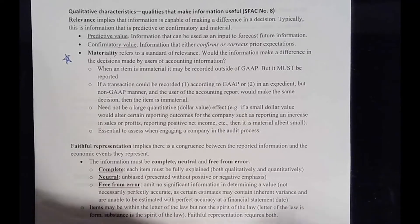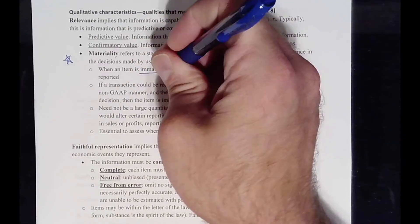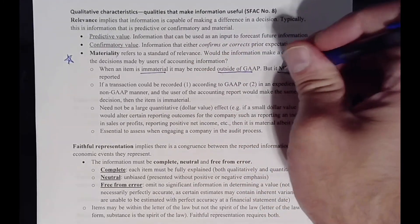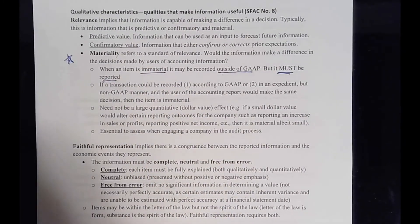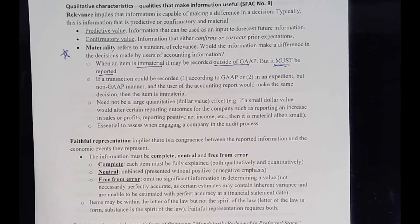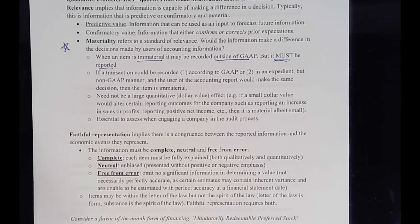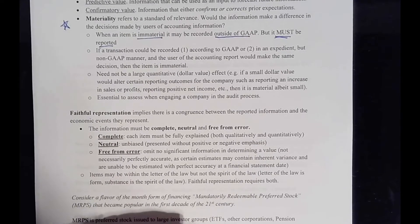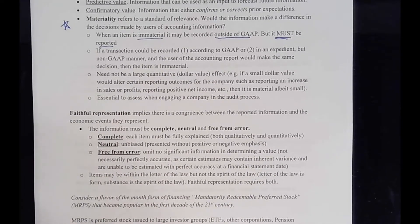When identifying transactions to record, we have to ask: is this transaction material? Will it make a difference in an investor or creditor's decision to invest their money? When an item is considered immaterial, it can be recorded outside of GAAP, but it must still be reported. It's not that we can just ignore it — we've identified it as something we need to record, but we may not have to follow the strict lines of GAAP. If a transaction could be recorded in a more expedient or easier way that is not GAAP, and the user would still make the same decision, then the item is immaterial.